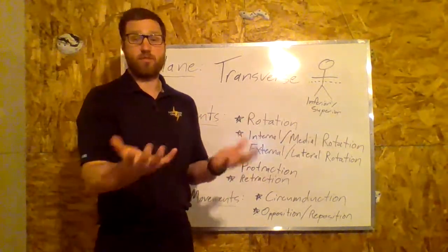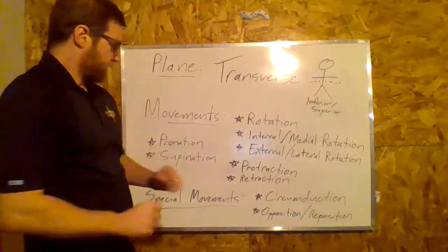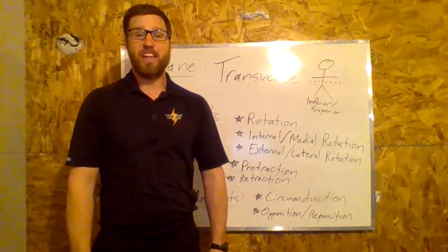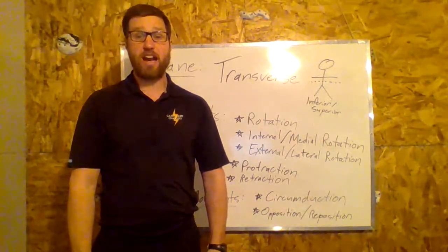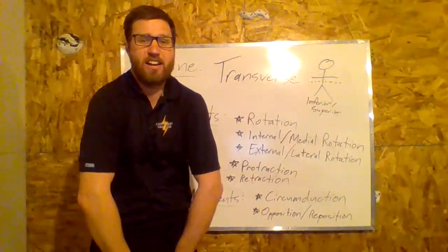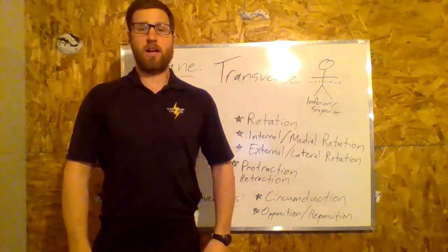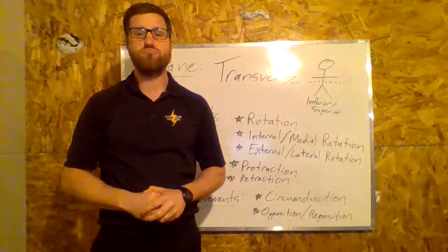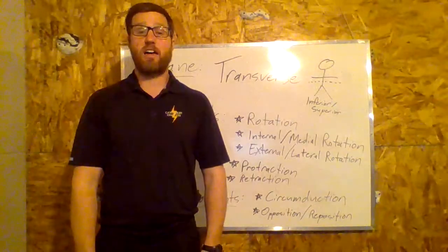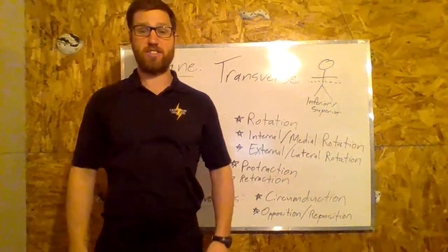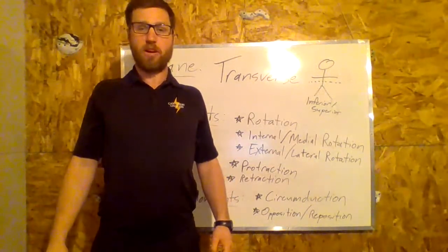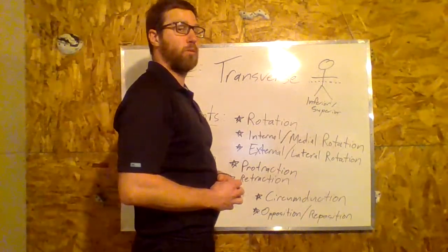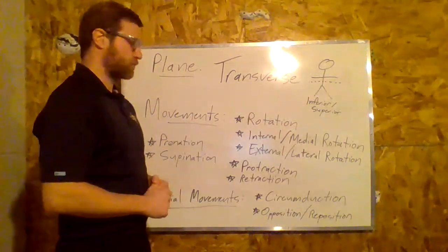Two more: protraction and retraction. These really occur most at the shoulder. When we protract at the shoulder, we hunch our shoulders in. I could also protract at the jaw by sticking it straight out. Retraction is the opposite — pulling the shoulders back, squeezing the two scapulae together. I could retract at the jaw too by sticking it out and pulling it back in. Most often these occur at the shoulder.